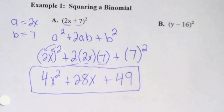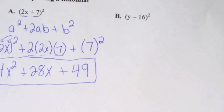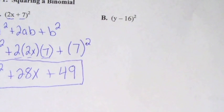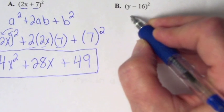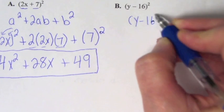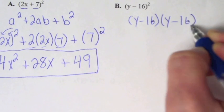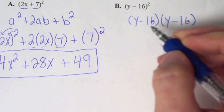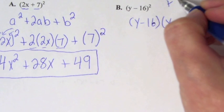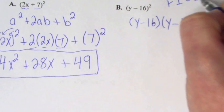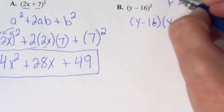Now let me show you why this formula works. Looking at example two, we have (y - 16) squared. This is the same as (y - 16) times (y - 16). If we were to use FOIL — first, inner, outer, last — we can multiply these out.